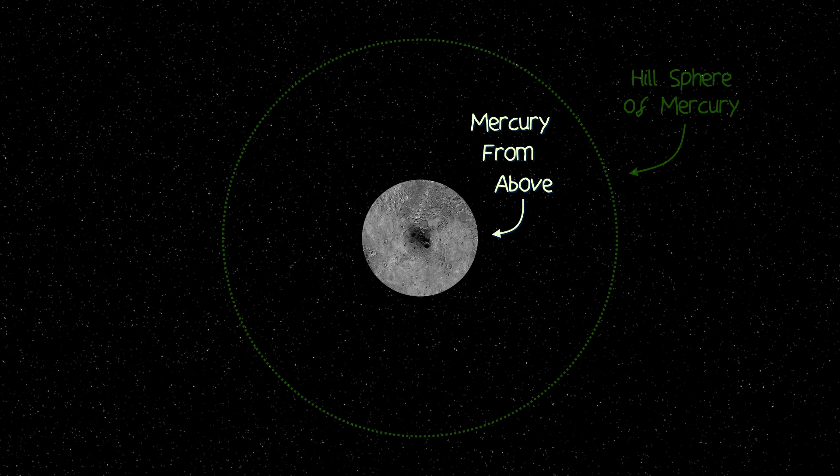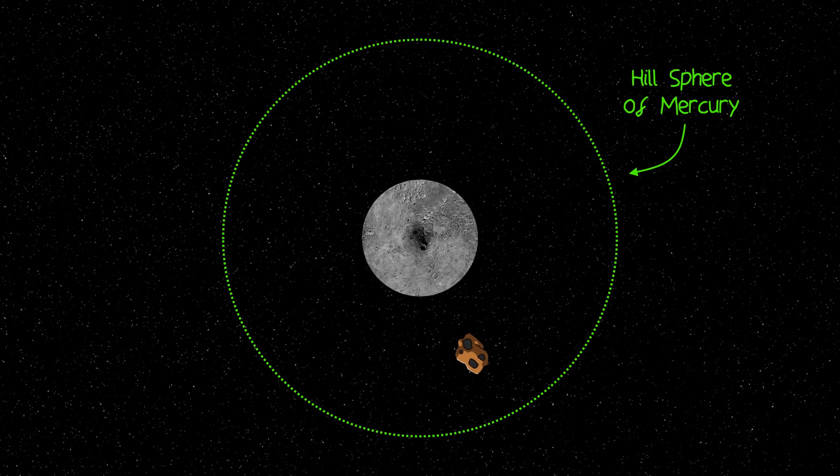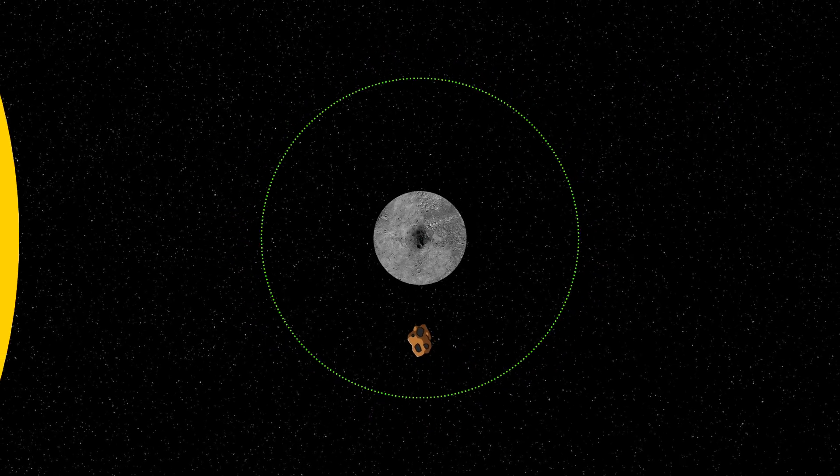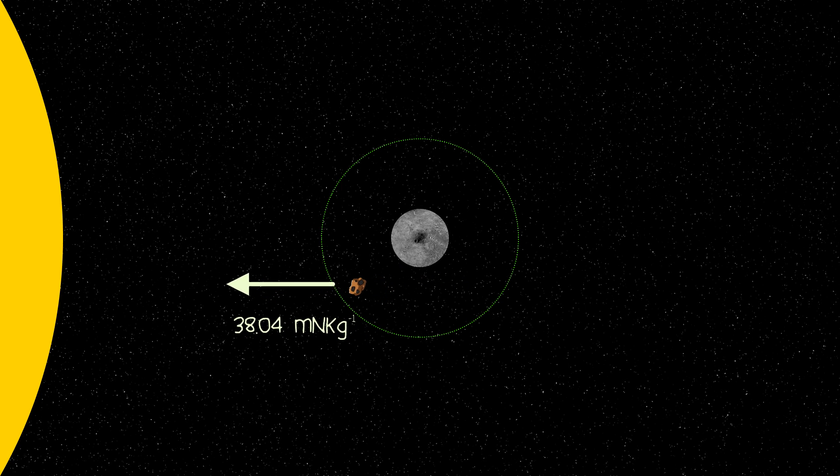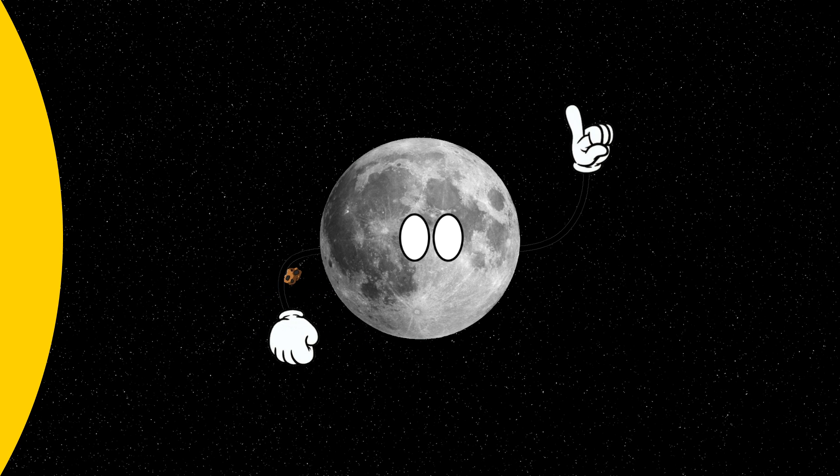But because Mercury is so close to the sun, even if we place an object well within Mercury's Hill sphere, the massive gravitational attraction of the sun would overcome that of Mercury's, and pull the object towards the sun. And this is assuming Mercury had the opportunity to catch a moon in the first place.